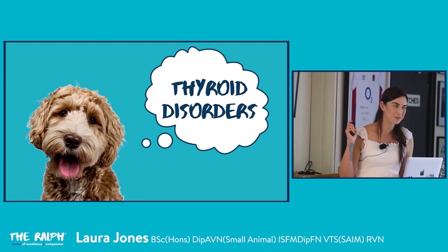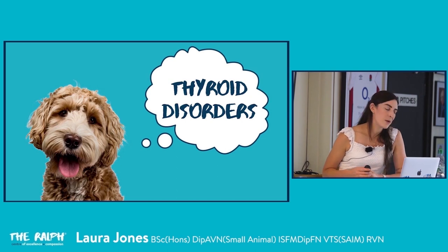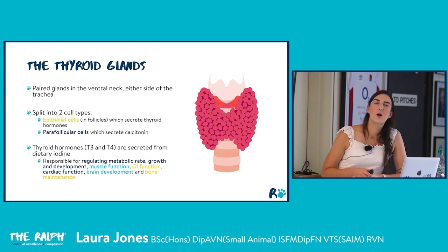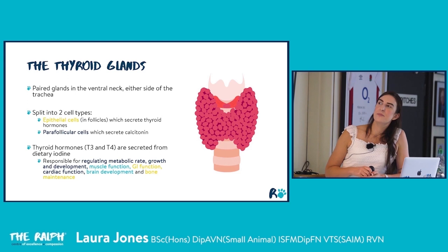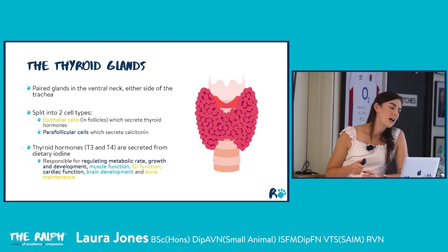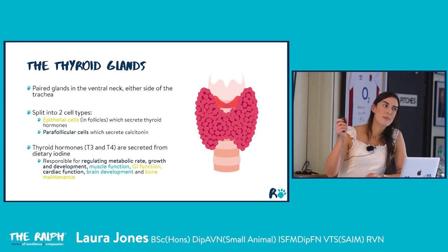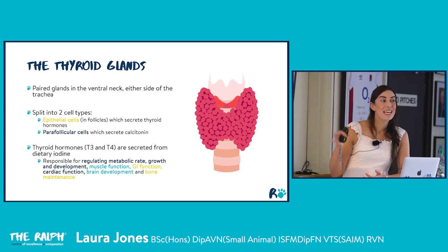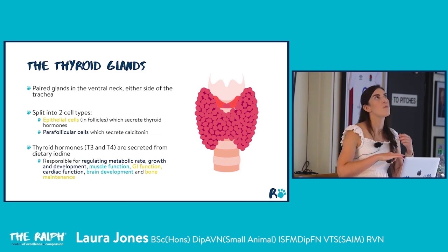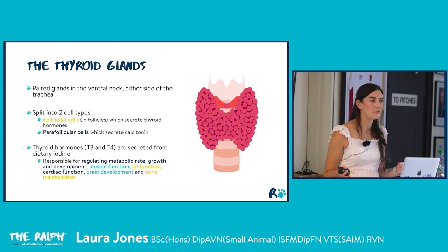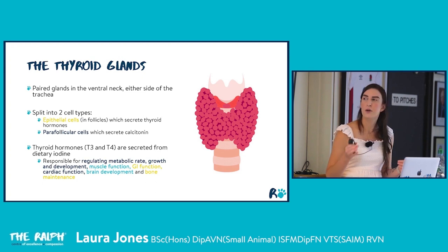Moving on to thyroid disorders — a whistle-stop tour since there's less to cover in terms of hospital management. The thyroid glands are paired glands sitting in the ventral neck either side of the trachea, containing epithelial cells that secrete thyroid hormones and parafollicular cells secreting calcitonin which lowers calcium. Thyroid hormones T3 and T4 are formed from dietary iodine and are responsible for regulating growth and metabolic rates, as well as bone and muscle function, GI health, brain development and cardiac function.